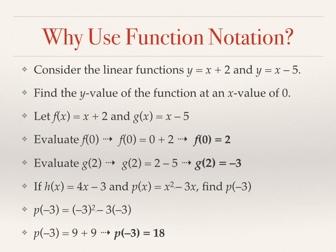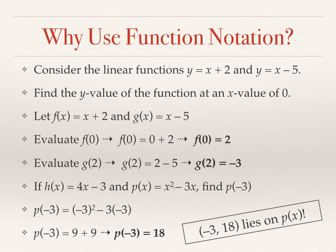p of negative 3 equals 18. Again, graphically what this means, because we've done some algebra here, but what does it mean graphically? It means negative 3 comma 18 lies on the curve that's called p of x. So we'll get more practice with that. We're just getting the feel for using function notation.